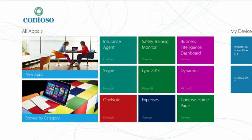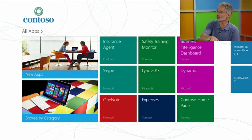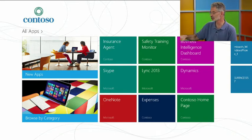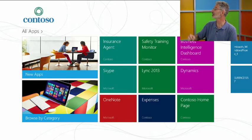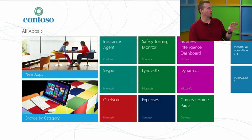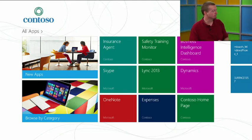The company portal is available for all platforms — Surface, iPad, Windows Phone 8, and Android coming soon. For Windows and iOS, users download it from the public store. For Windows Phone 8, the company portal is installed automatically as part of the enrollment process — you specify it during subscription properties setup. Once users have the portal, it's a consistent experience regardless of which platform they're using.